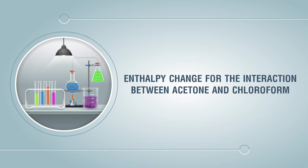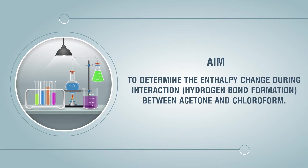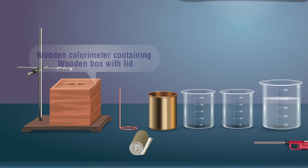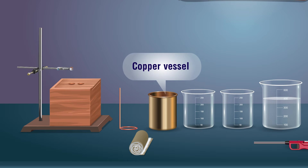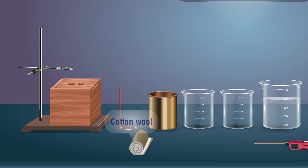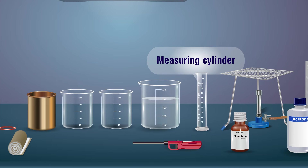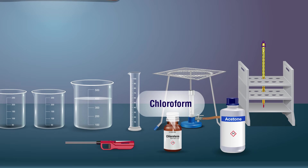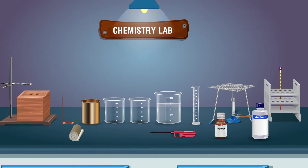Enthalpy change for the interaction between acetone and chloroform. Aim: to determine the enthalpy change during hydrogen bond formation between acetone and chloroform. Materials required: wooden calorimeter containing a wooden box with lid, stirrer, copper vessel, beaker, cotton wool, water, lighter, measuring cylinder, tripod stand with wire gauze, Bunsen burner, chloroform, acetone, and thermometer.